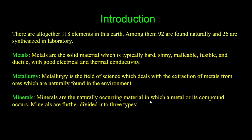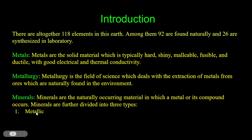Minerals are the naturally occurring material in which a metal or its compound occurs. Minerals are further divided into three types: first, metallic minerals; second, non-metallic minerals; and third, energy minerals.